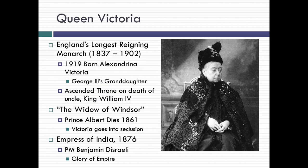At the beginning of the 20th century, the British monarch was Queen Victoria. You've heard of the age of Victoria, or the Victorian era — it's named after her. She was the longest reigning monarch up to Queen Elizabeth, reigning for almost 60 years. She was born in 1819 as the granddaughter of King George III, who, as you recall from American history, was the king at the time of the American Revolution. So she, Alexandria Victoria, was his granddaughter.